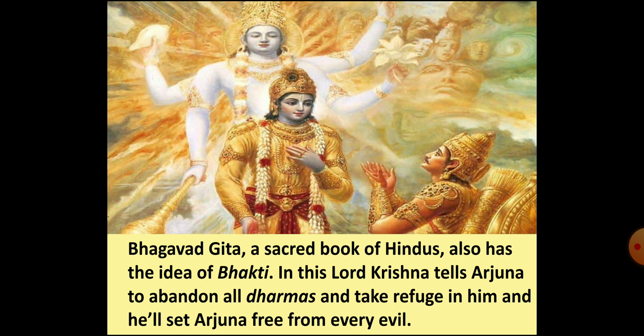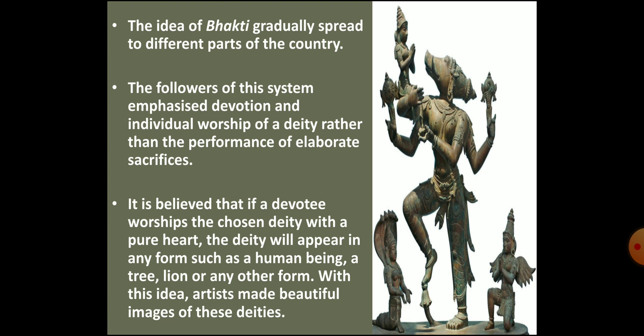In the Bhagavad Gita, Lord Krishna tells Arjuna — who was Krishna's devotee and friend — that only Krishna can make Arjuna free from all evil. Therefore, Arjuna should give up all dharmas and take Krishna's shelter. With the passage of time, this form of worship, i.e. Bhakti, spread to various parts of the country. The followers of Bhakti believed in devotion and individual worship of a god or goddess instead of the previously popular system of performing elaborate sacrifices. The idea of Bhakti says that if a devotee worships his or her chosen deity with a pure heart, the deity will appear in any form — a human being, a tree, a lion, or any other form.